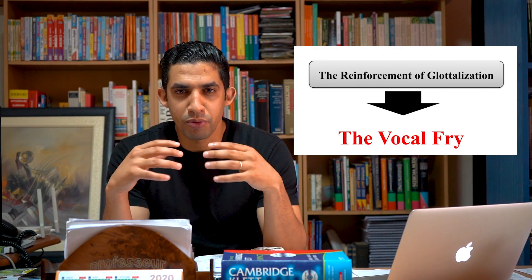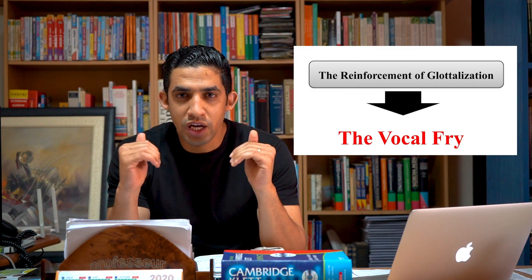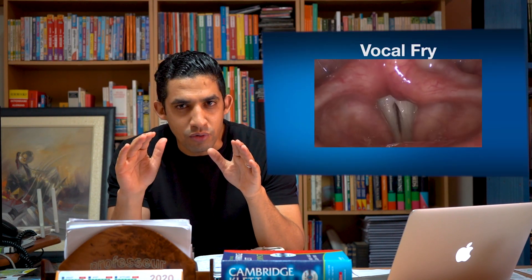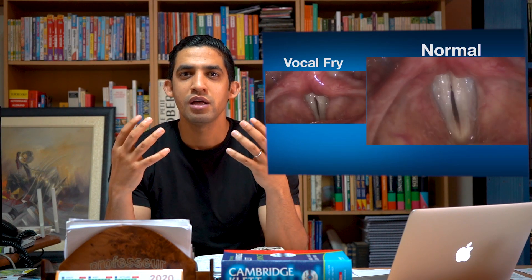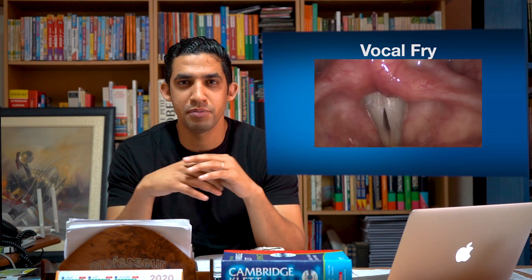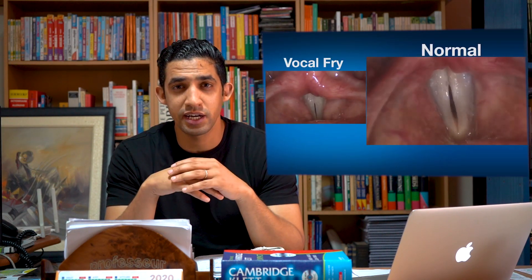In normal speech, the vocal cords are brought together in a smooth way. But in reinforced glottalization, the vocal cords are tightly squeezed, allowing only bubbles of air to break through — this is what causes vocal fry. Instead of normal smooth speech, glottalization is reinforced, and that is exactly what shapes the American accent. The American pronunciation is hugely influenced by glottalization and vocal fry. This is the first phonological process shaping the American accent.